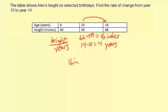So it's going to be 16 inches divided by 4 years. And 16 divided by 4 is 4. And the rate is going to be inches per year.